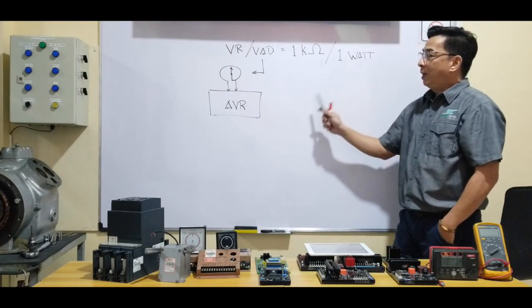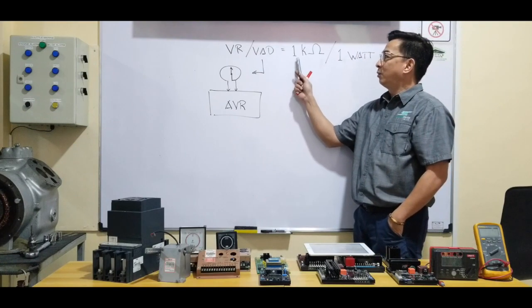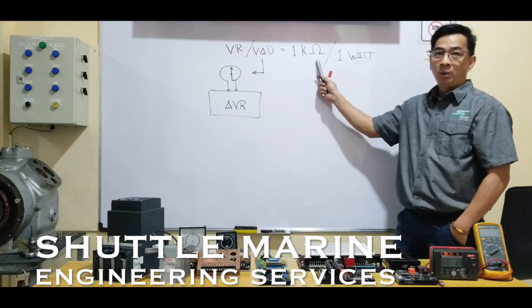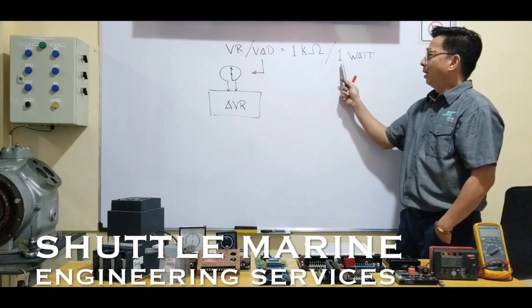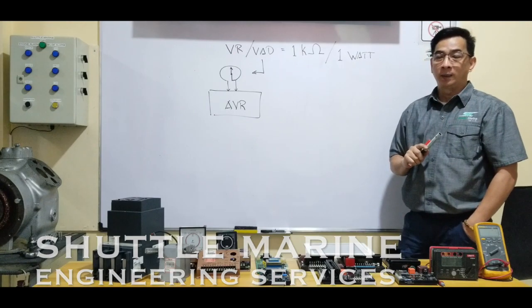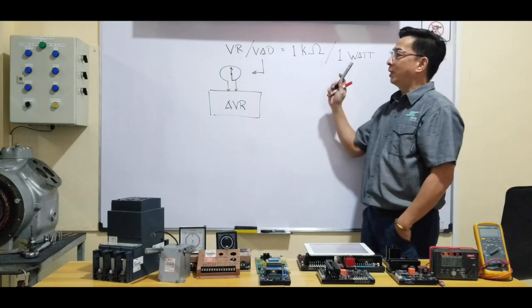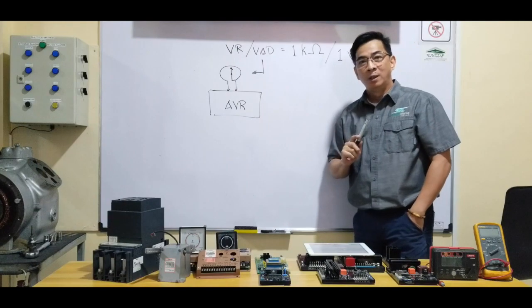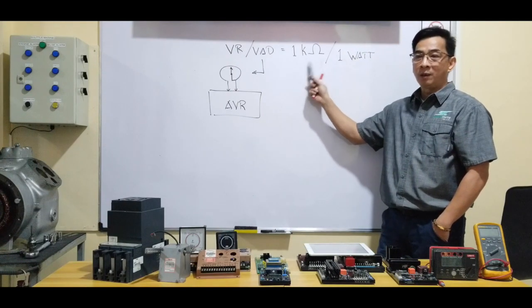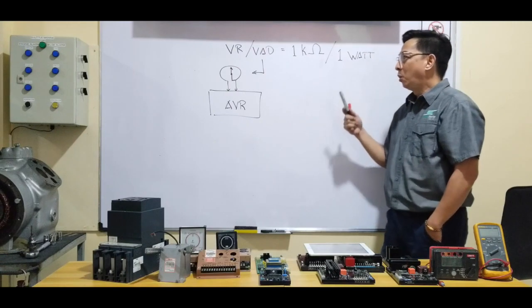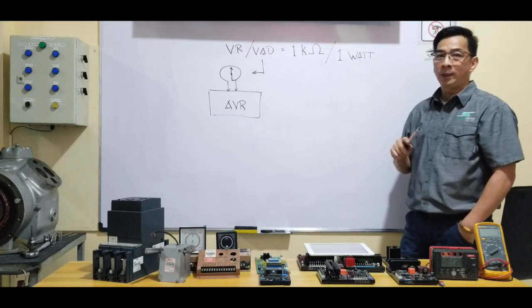Our AVR is having a resistance value of 1k ohms or 1,000 ohms and power of 1 watt. So can we use a different value on this AVR? Meaning if we're having a higher or lower resistance value or a higher voltage value.